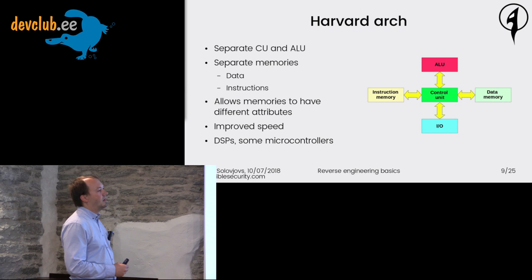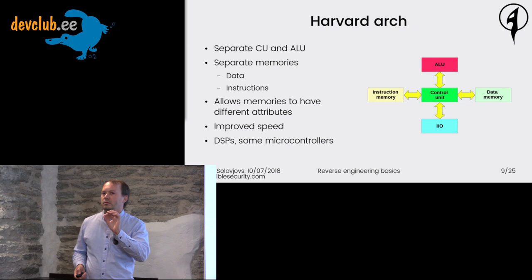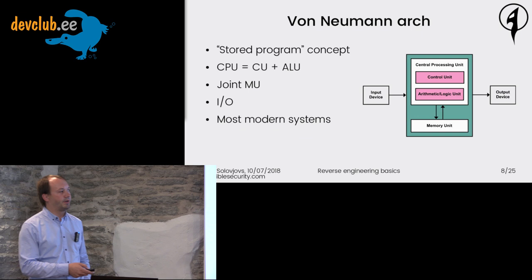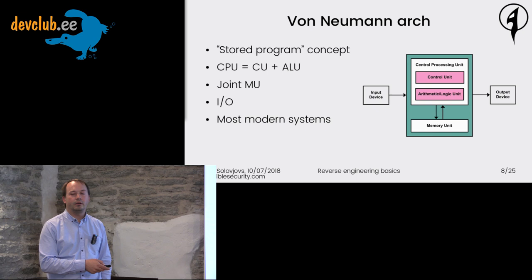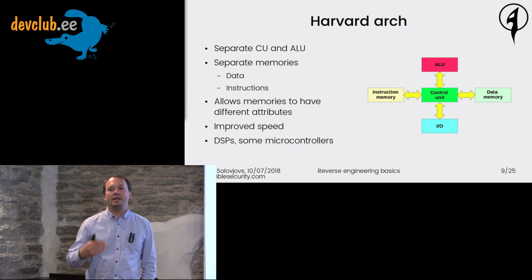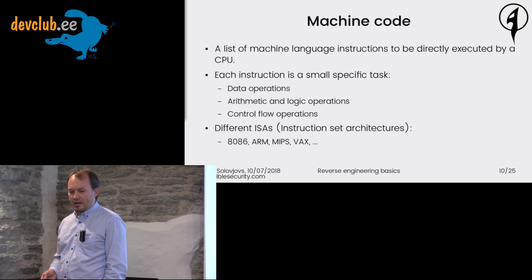The speed improvement in Harvard architecture comes from the control unit not needing to wait to read an instruction and then data from the same memory. Here, the CPU can read the instruction and data from different memory buses at the same time. Von Neumann was easier to implement, which is why it's more common on the market. Now, machine code.